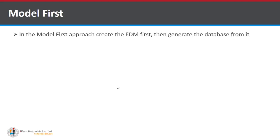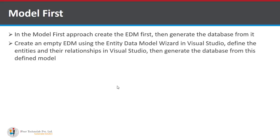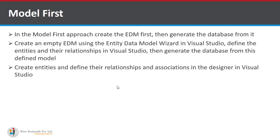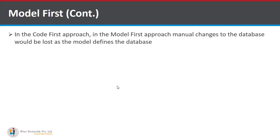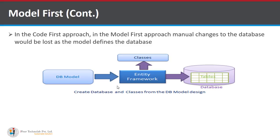The last approach is Model First. In Model First, create the EDM first and then generate the database from it. Create an empty EDM using the Entity Data Model wizard in Visual Studio. Define the entities and their relationships in Visual Studio, then generate the database from the defined model. Specify key properties and data types using the designer, and use partial classes to implement additional features. Note that manual changes to the database would be lost since the model defines the database.